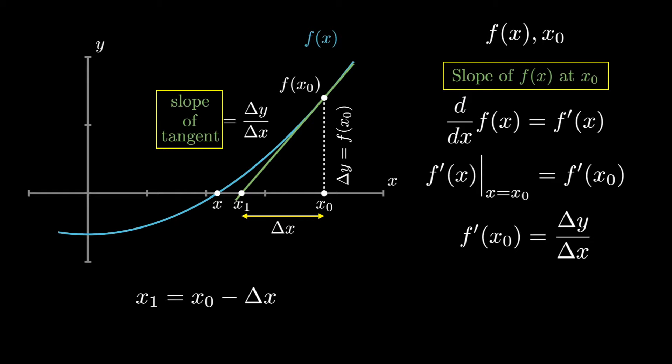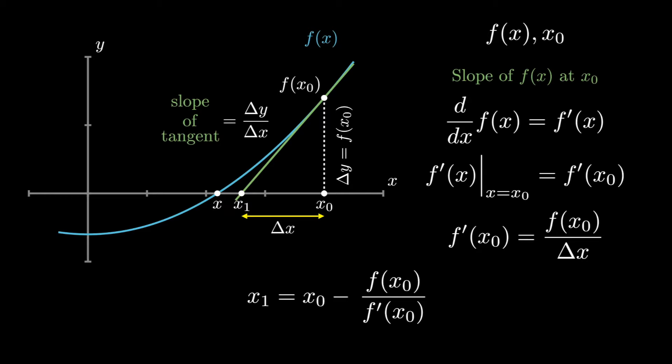So, we can write f'(x_0) equals to Δy over Δx. We know Δy is f(x_0). Therefore, Δx is f(x_0) over f'(x_0) and x_1 is x_0 minus f(x_0) over f'(x_0).